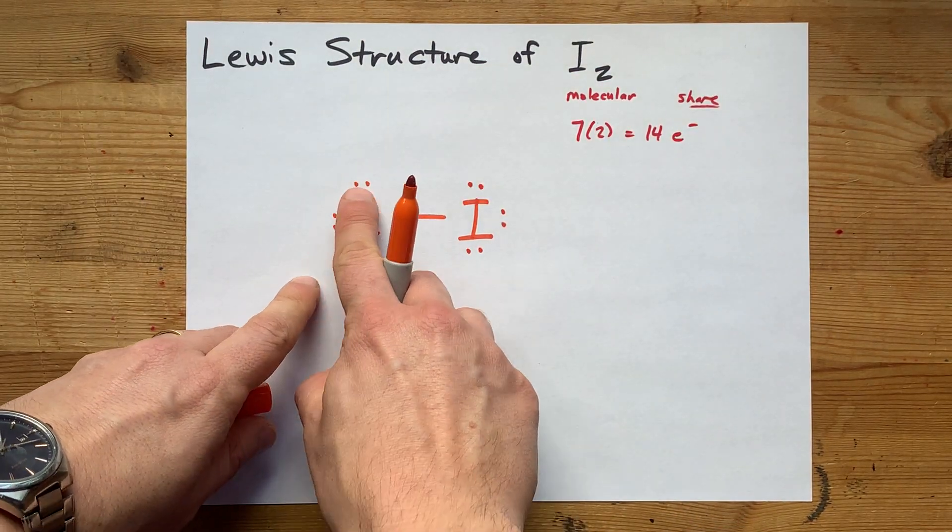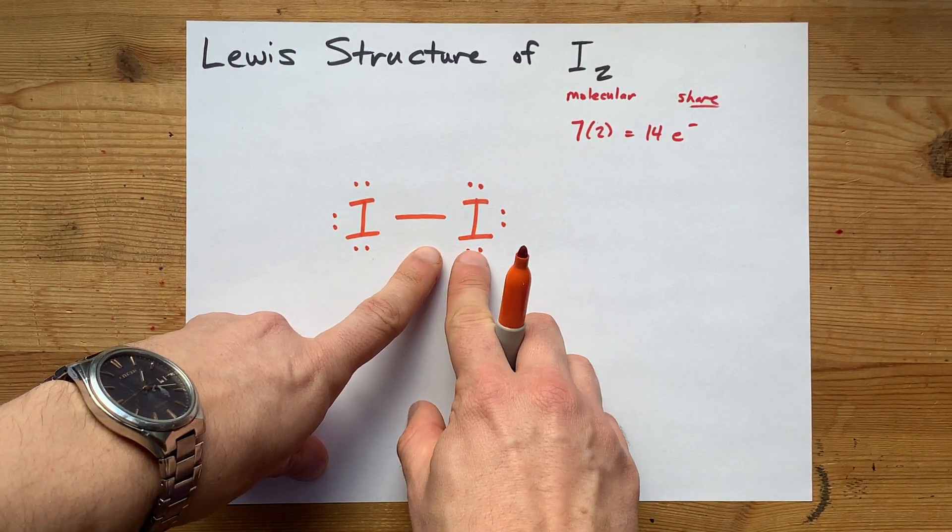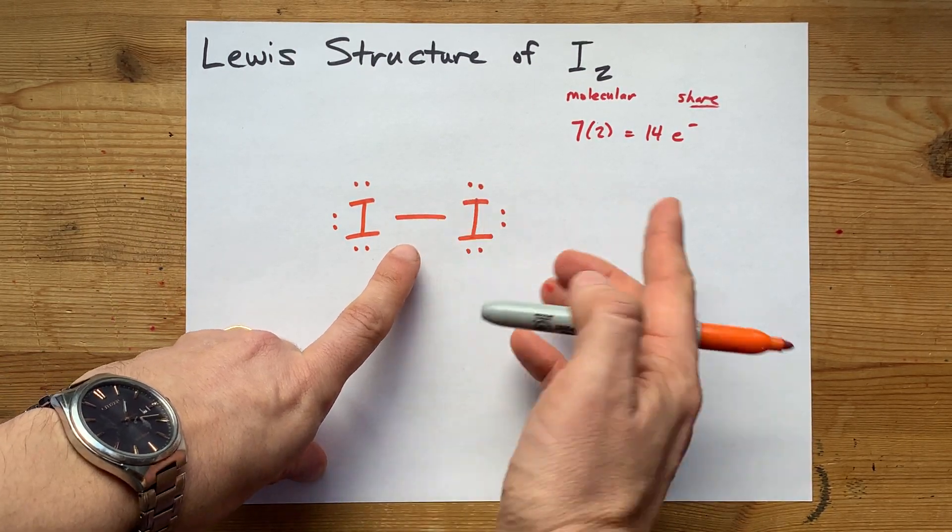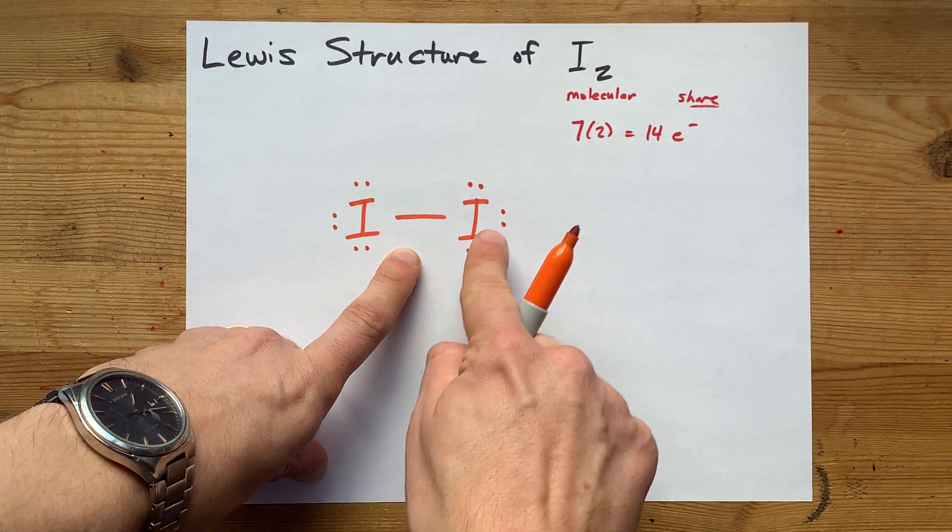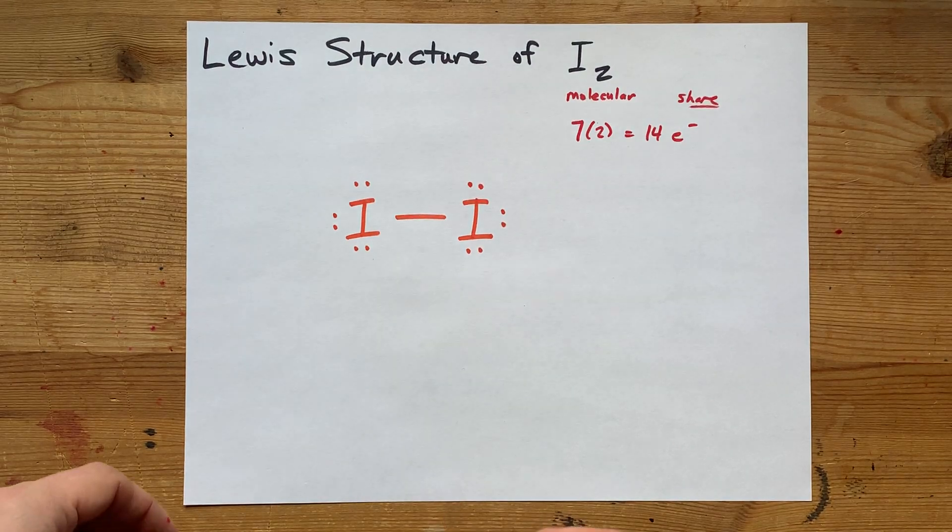This iodine has 2, 4, 6, 8 electrons around it. He's happy. This iodine has 1, 2, 3, 4 pairs—2, 4, 6, 8 electrons around it total. It's also happy. They satisfy the octet rule.